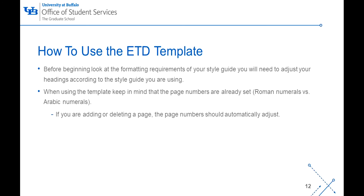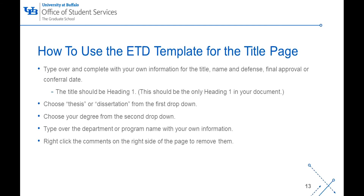When using the template, keep in mind that the page numbers are already set, with preliminary page numbers being Roman numerals and the main body being Arabic numerals. If you are adding or deleting a page, the page numbers should automatically adjust. The template includes pagination instructions if needed. On the title page, you will need to type over the title, name, and date with your own information. The title must be Heading 1 — this should be the only Heading 1 in your document. Select "thesis" for master students or "dissertation" for PhD students from the drop down, then choose your degree, type over the department or program name, and right-click on the comments on the right side of the page to remove them.